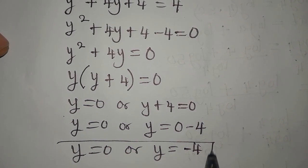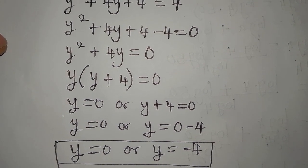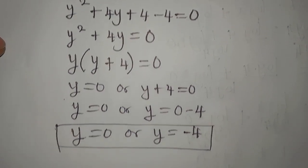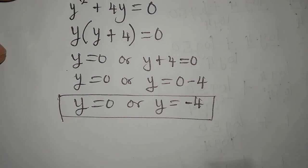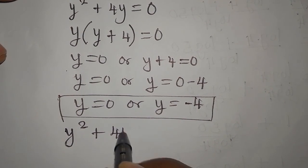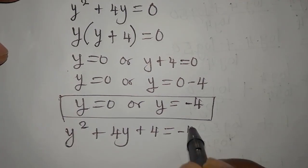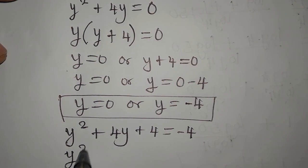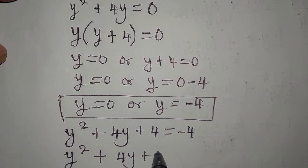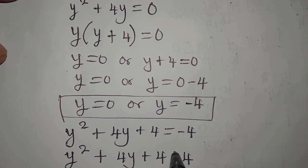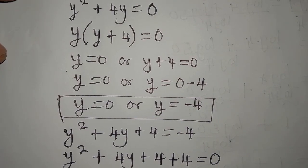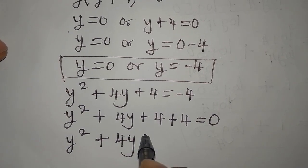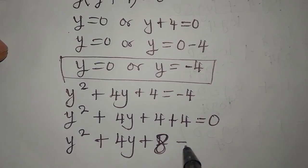So from that first equation we have two solutions: y = 0 or y = -4. Now we go back to the other equation which we left out. That equation is y squared plus 4y plus 4 equals negative 4. Bringing the negative 4 to the left, we have y squared plus 4y plus 4 plus 4 equals 0, which gives us y squared plus 4y plus 8 equals 0.